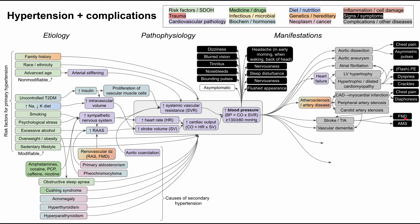The main symptoms of strokes and TIAs are focal neurologic deficits and altered mental status. High blood pressure over time also affects the arteries going to the kidneys, causing hypertrophic arteries with medial and intimal thickening, leading to arterial narrowing and low glomerular blood flow. In very acute cases this can cause acute kidney injury, while chronically it leads to ischemia and fibrosis, progressing to chronic kidney disease or end-stage renal disease.